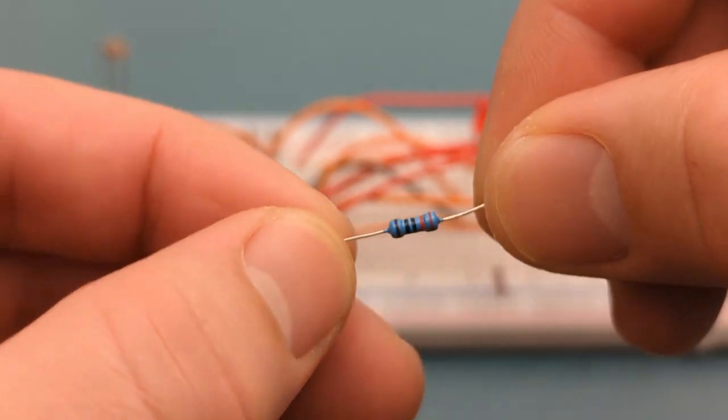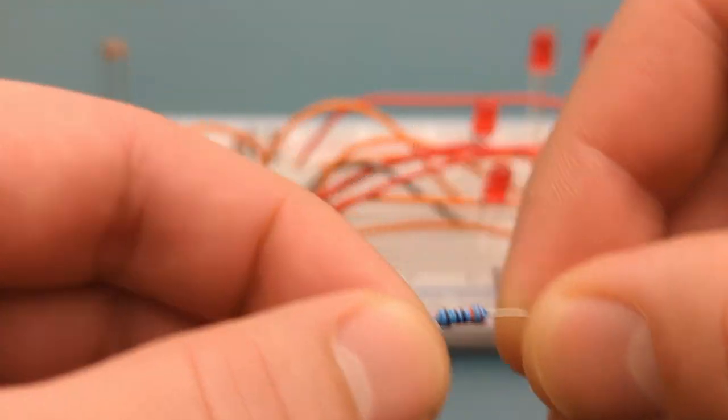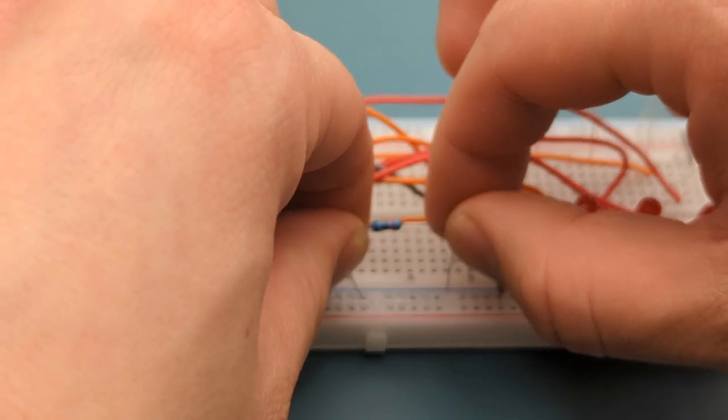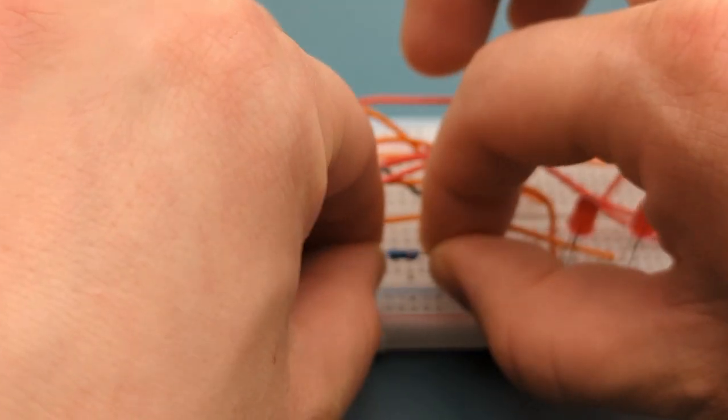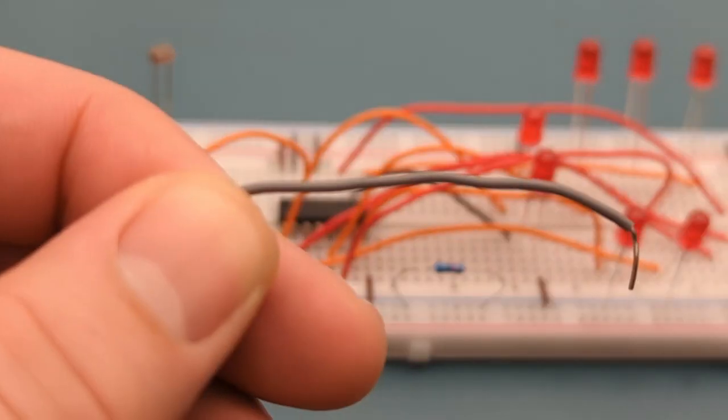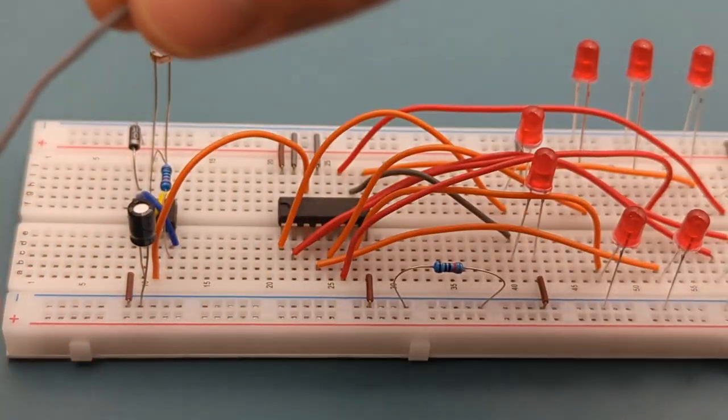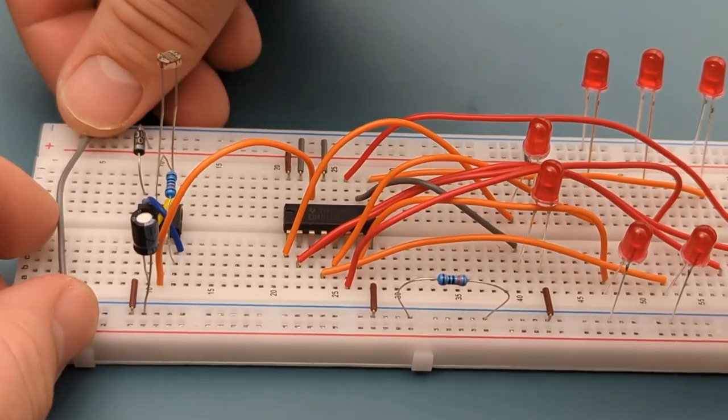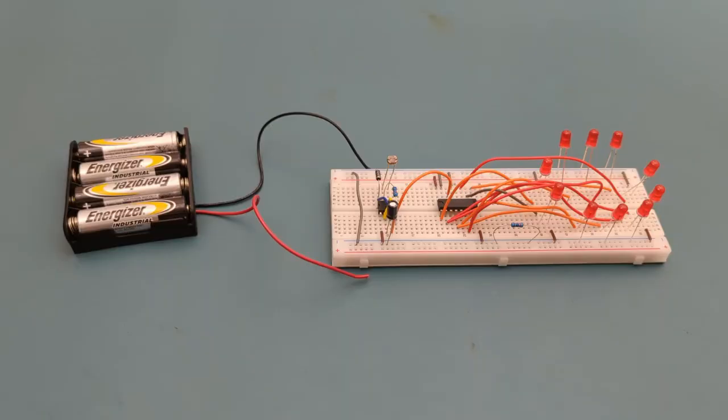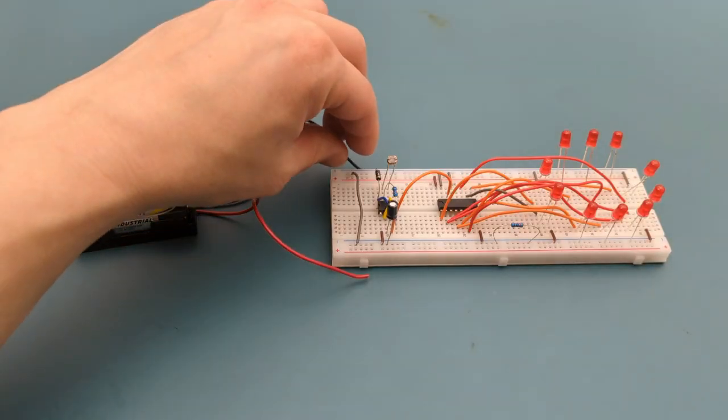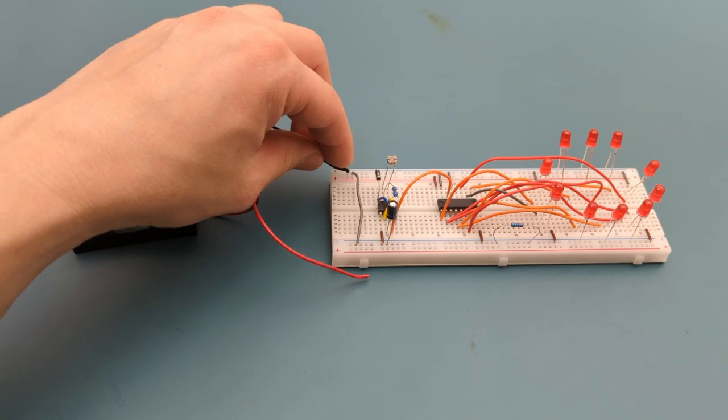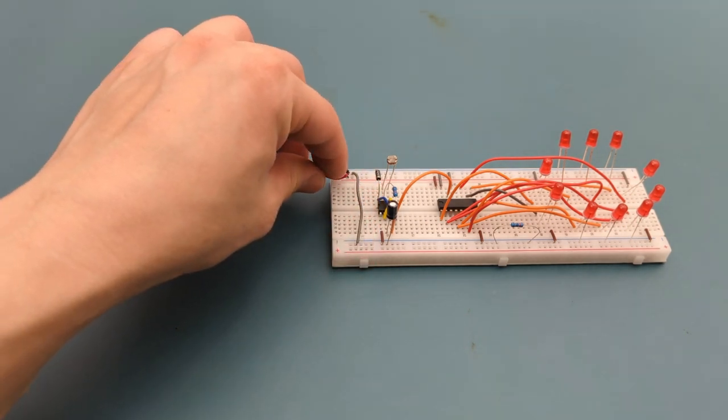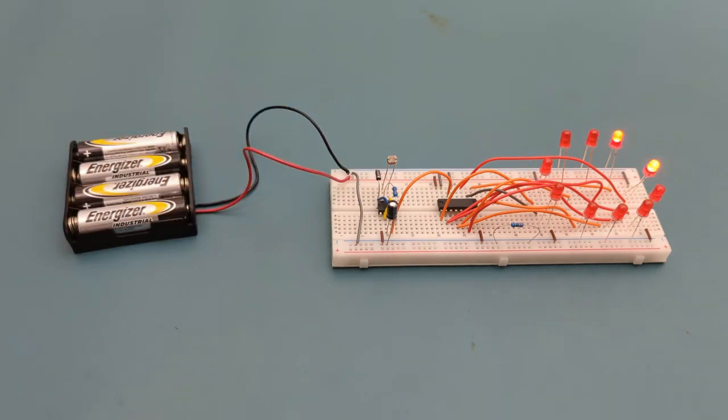Bend the ends of a 330 ohms resistor. Insert the 330 ohms resistor in the negative rail. Use a jumper wire to connect the negative rails. It's time to connect the power supply. Attach the negative lead from the battery holder to the negative rail. Attach the positive lead from the battery holder to the positive rail. We have successfully completed the circuit.